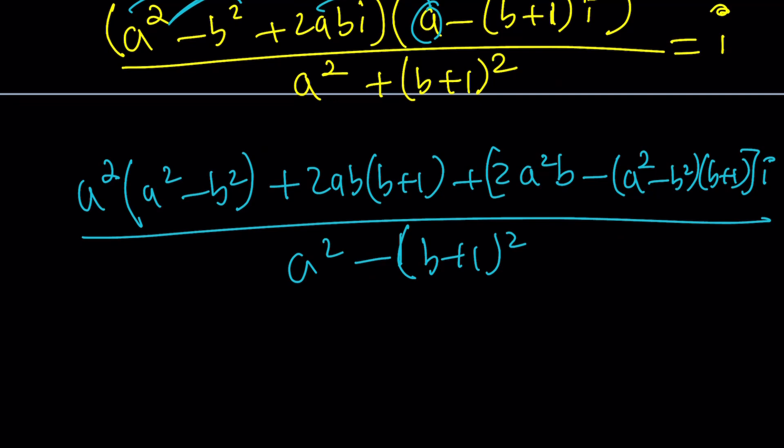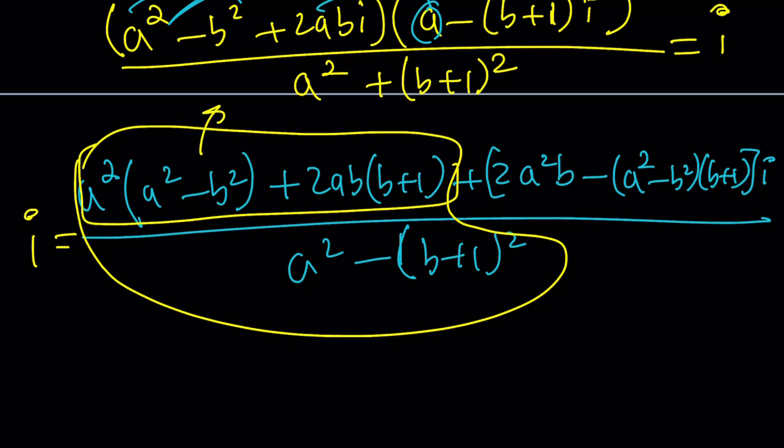Since this is equal to i, the real part must be 0. And this is the real part. If the real part is a fraction and it's 0, then the numerator of that fraction must be 0. So this must be 0. And this must be 1. And good luck solving that system of equations.